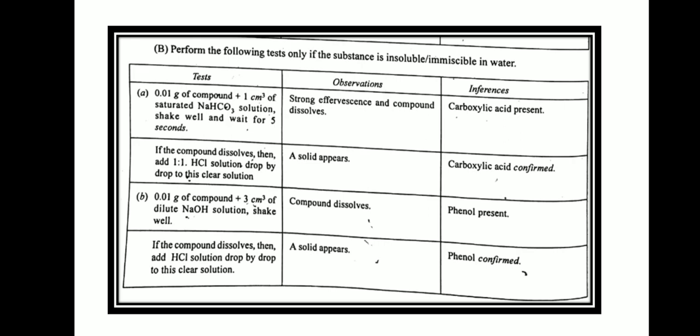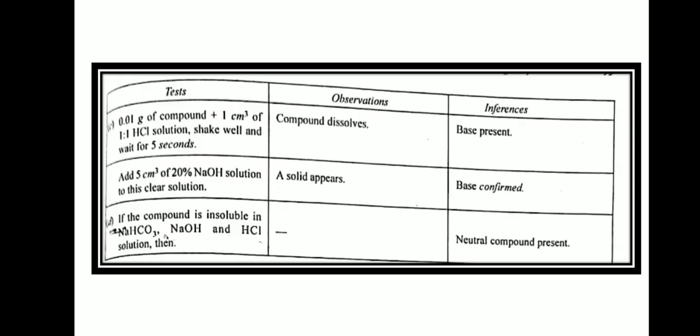If the carboxylic acid test is not positive, perform the test for phenol. Take the compound in a test tube and add 3 ml of dilute NaOH solution. If the compound dissolves, phenol is present. To confirm, add HCl solution drop by drop — if a solid appears, phenol is confirmed. If that test is also negative, test for base: add 1 ml of 1:1 HCl, shake and wait. If compound dissolves, a base is present; confirm by adding 20% sodium hydroxide solution — if a solid appears, base is confirmed. If the compound is insoluble in sodium bicarbonate, sodium hydroxide, and HCl, it is a neutral compound.